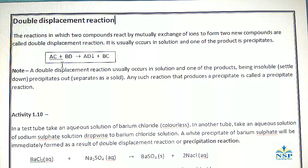For example, AC when react with BD gives AD as a precipitate plus BC.